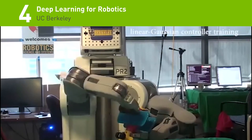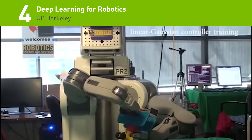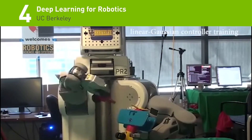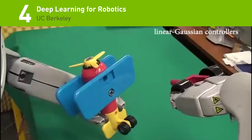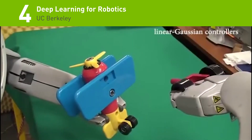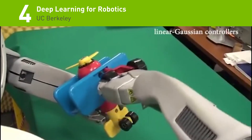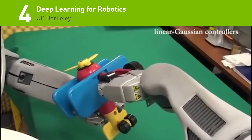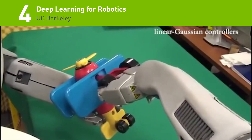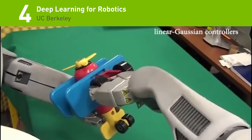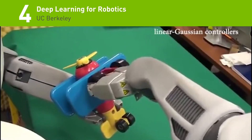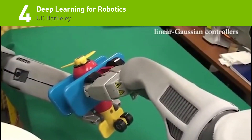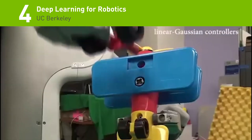Next, deep learning for robotics. Programming robots is notoriously difficult. UC Berkeley will describe how robots are being equipped to learn on their own and the recent progress in letting them learn through a process of trial and error.